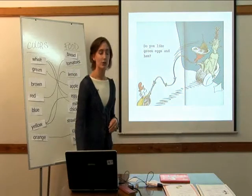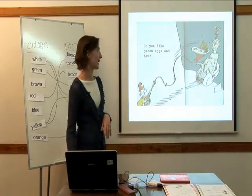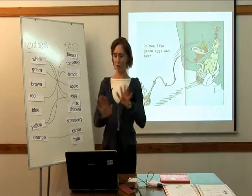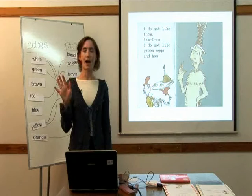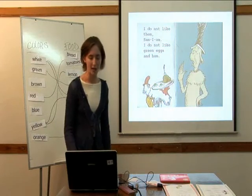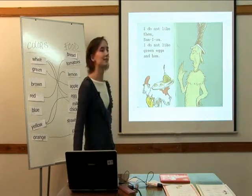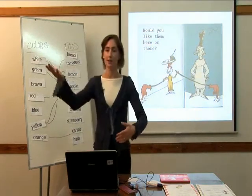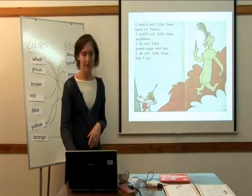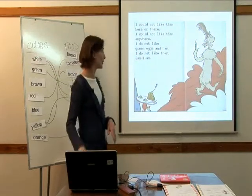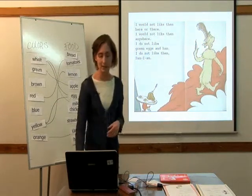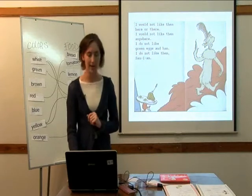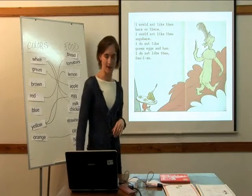Sam I am says, 'Do you like green eggs and ham?' You can see his face — no. He says, 'I do not like them, Sam I am. I do not like green eggs and ham.' So he asks, 'Would you like them here or there?' 'I would not like them here or there. I would not like them anywhere. I do not like green eggs and ham. I do not like them, Sam I am.'